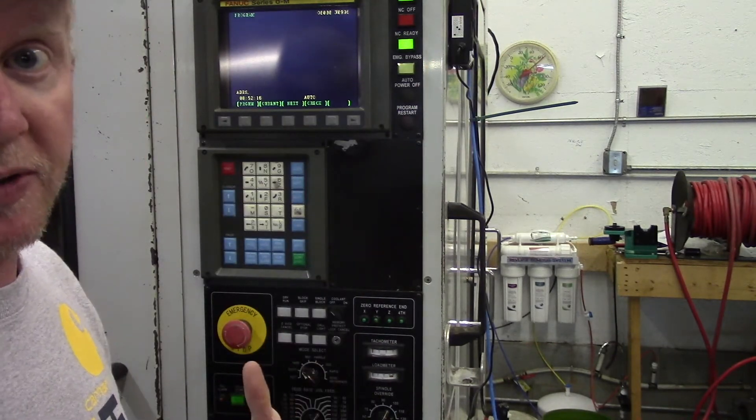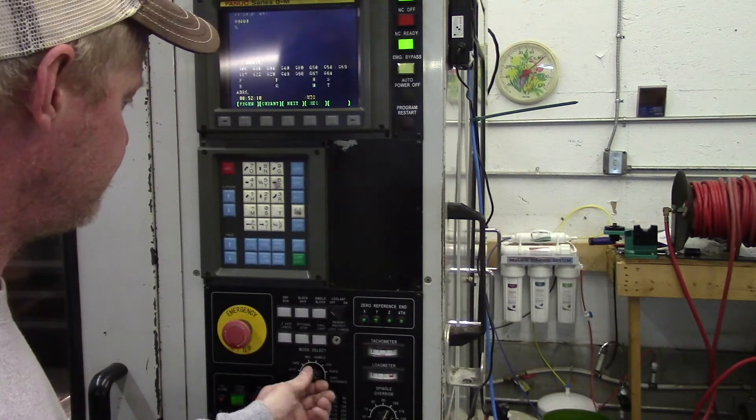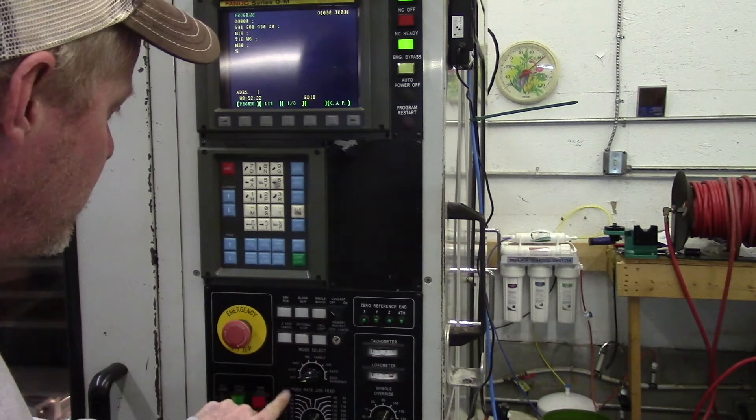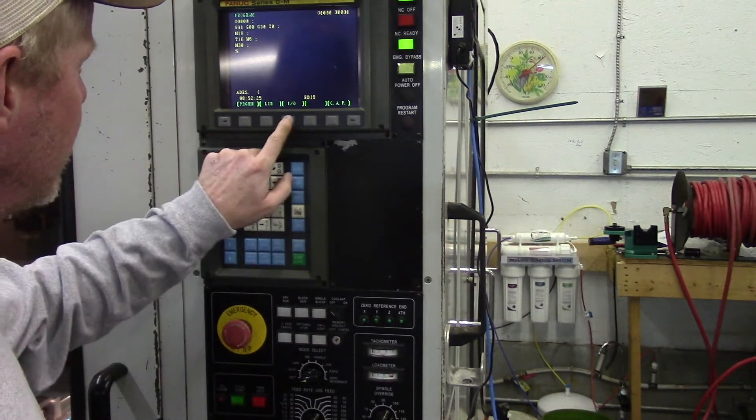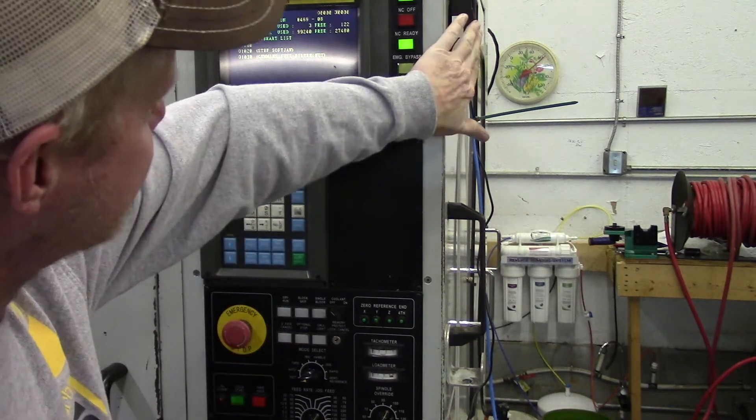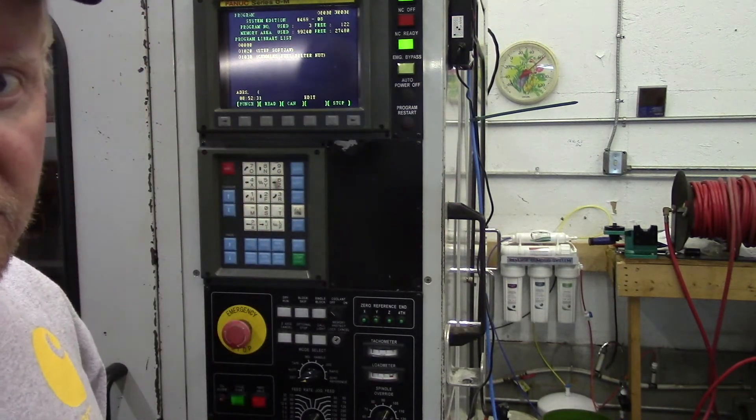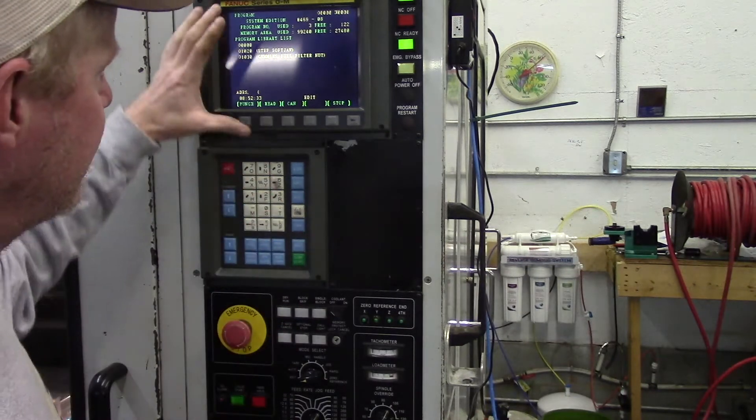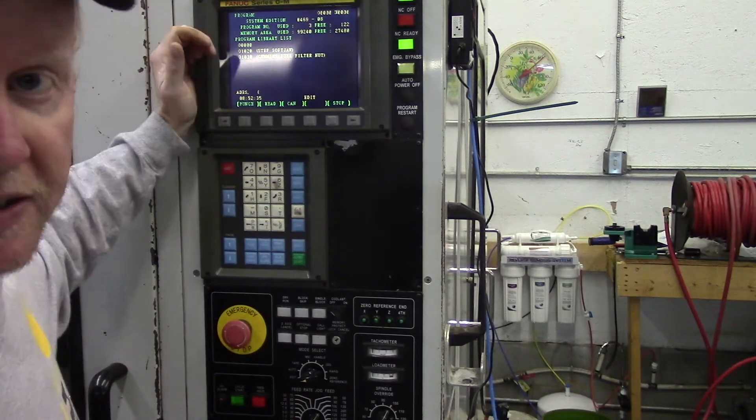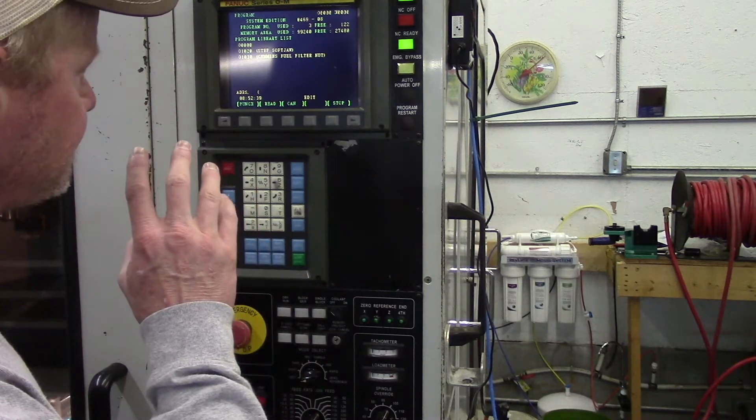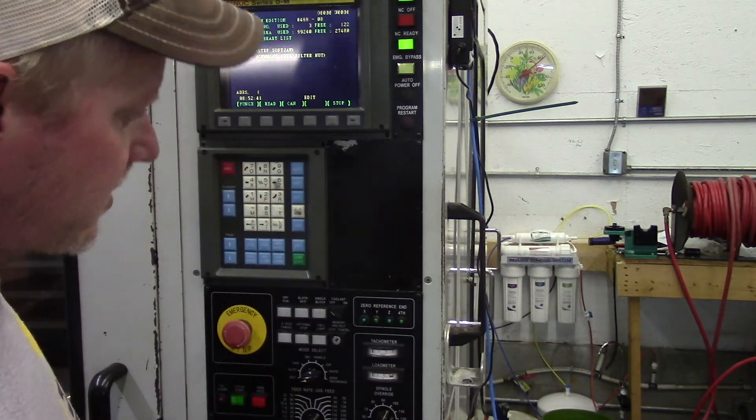If we want to load a program, on my machine I would go over to edit and I would go to IO. With this running, I would basically hit read. Once I hit read, it'll automatically download it into the memory and it will show up in your library list, and you can run that directly to the machine.